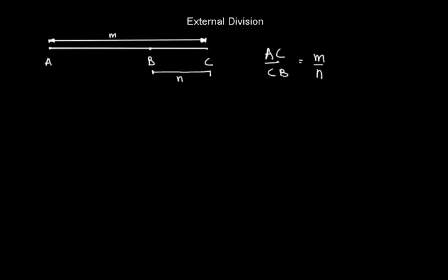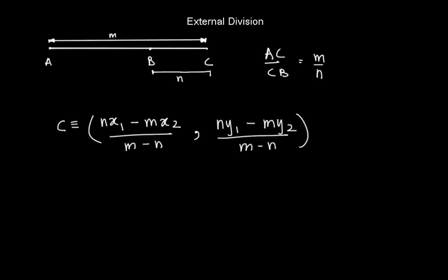So how to find out the coordinates of C in this case? Well, it is pretty simple: you just have to replace the plus sign by a negative sign in the same formula. So here is the formula - just replace plus by minus and you are done with external division of a segment.